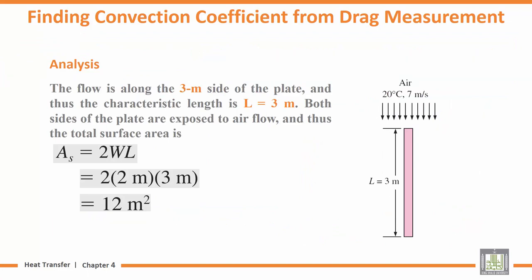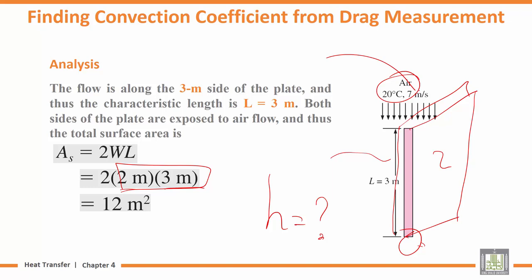Next we calculate the surface area. Since we need H, the heat transfer coefficient, we must know the surface area where the air interacts with the flat plate. The flow is along this direction, so on this side it's 3 meters by 2 meters. But the plate has two surfaces—this surface and the surface on the other side—so we have two areas of 3 by 2. Therefore, As = 2WL = 2(2 m)(3 m) = 12 m².